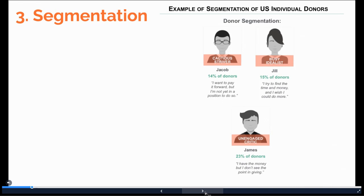There is one segment, the cautious driver, who wants to give but doesn't feel they're in a comfortable enough financial position to give more. There's a busy idealist who also wants to give more and often feels guilty for not giving more, but feels stressed for time and has difficulty making decisions on how and where to give. Another segment is the unengaged critic, who could donate more but doesn't see the value in it and is skeptical of how donated money would be used. Despite having similar disposable income, these segments face different barriers to giving more to charity, and the way you would encourage them to change their behaviors would be very different.